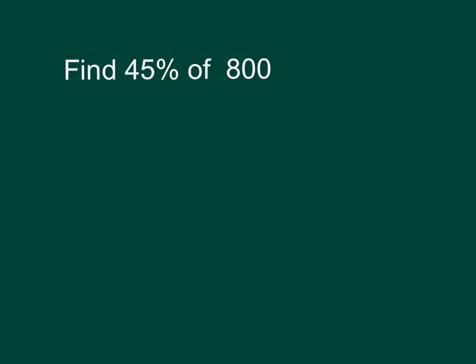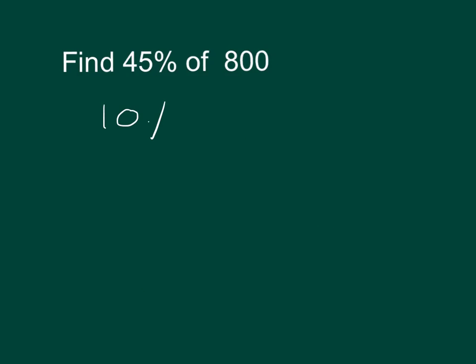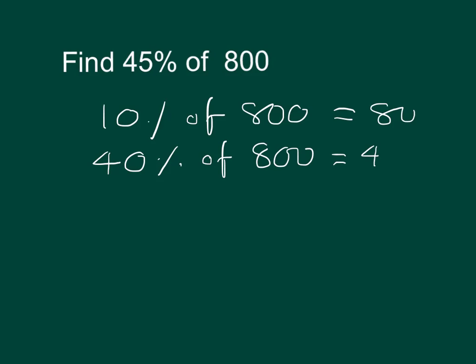Find 45% of 800. So we'll start by finding 10%. So 10% of 800 will equal 80. We can quickly find out what 40% is. 40% will be 4 times 10%. So we need to do 4 times 80, which is 320.